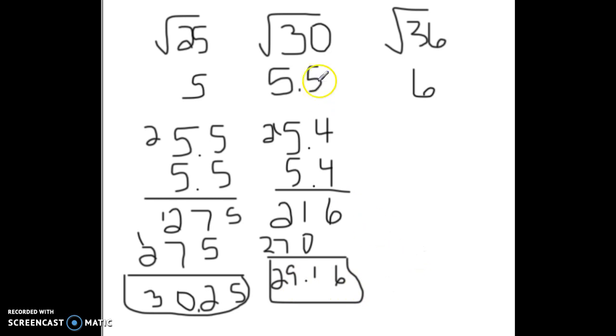And by the way, just for fun, square root of 30, that's irrational. Square root of 25, rational. This can be expressed as a whole number decimal. This one, if you were to actually keep working it out, will go on and on forever and ever. It will be a decimal that never ends and never repeats. Remember, 5.5 is just an estimate.